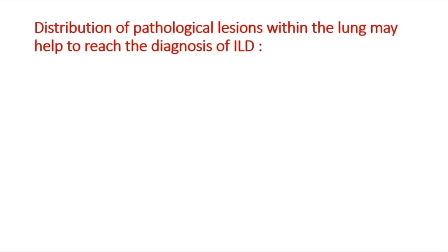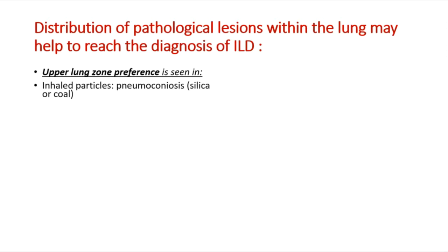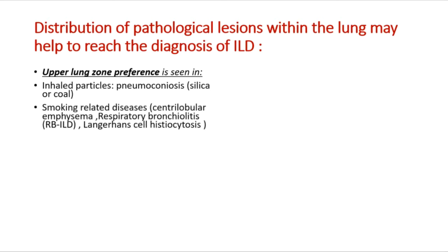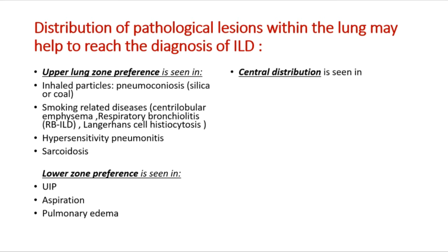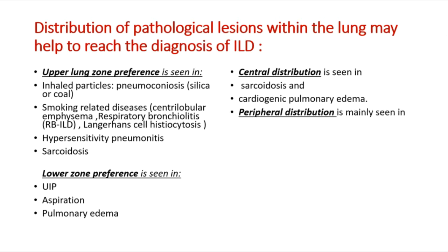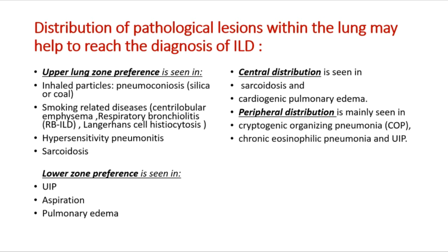Distribution of pathological lesions within the lung helps reach an ILD diagnosis. Upper zone predominance is seen in inhaled particles (pneumoconiosis — silica or coal), smoking-related diseases (centrilobular emphysema, respiratory bronchiolitis/RBILD, Langerhans cell histiocytosis), hypersensitivity pneumonitis, and sarcoidosis. Lower zone predominance is seen in UIP and aspiration pulmonary edema. Central distribution is seen in sarcoidosis and cardiogenic pulmonary edema. Peripheral distribution is mainly seen in COP, chronic eosinophilic pneumonia, and UIP.